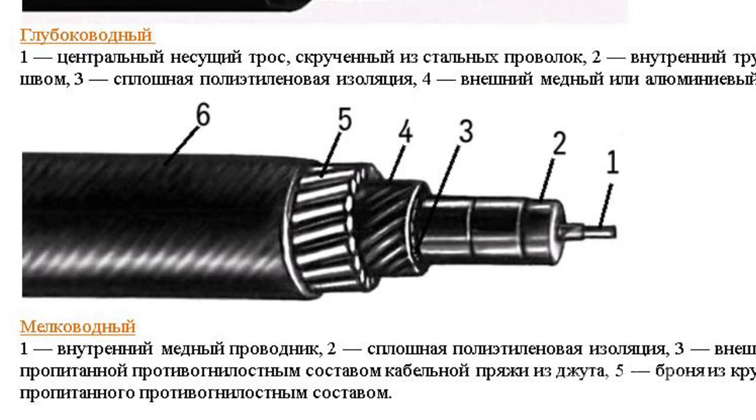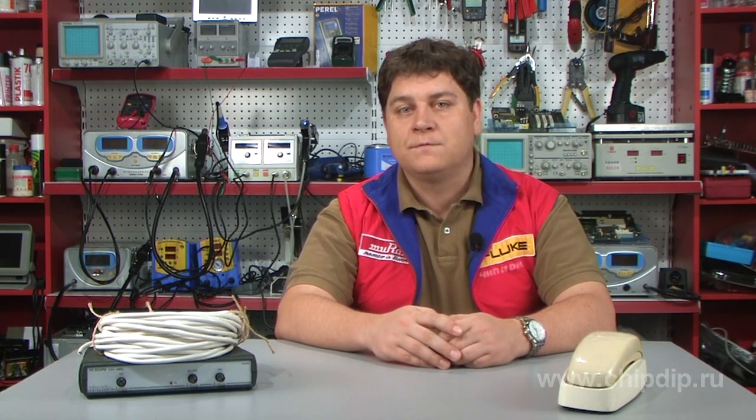The most important thing is that the shallow water cable is additionally protected by a steel wire armor. You may ask why — it protects the cable against possible physical effects of ship navigation, such as contact with trawls and anchors, as well as against rubbing against the ground. Such a cable may have a diameter of up to 48 millimeters and can weigh about 3 tons per kilometer. A deep water cable is about 1.5 times thinner and lighter.